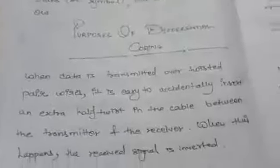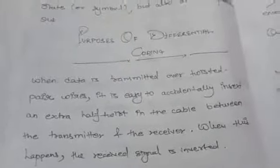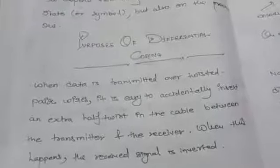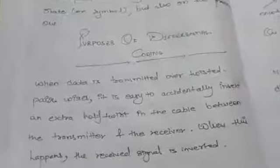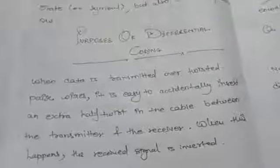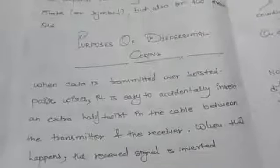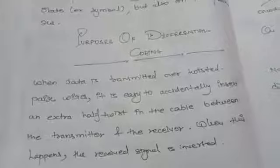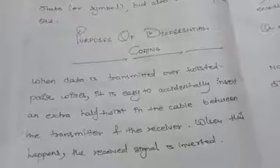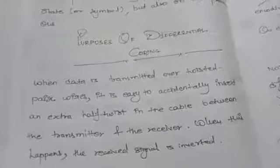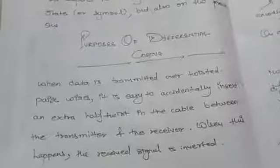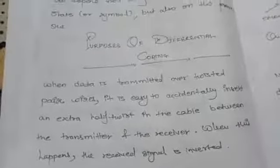The basic purpose of differential coding is this: when our voice, audio, or speech is transmitted in twisted pair cables or wires, we can see some insertion — a half twist or bending. We can see an extra half twist between transmitter and receiver, and when that happens, we see an inversion, meaning the signal will be in inverted form.